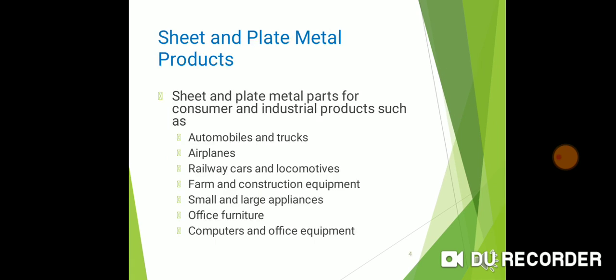Sheet metal products are parts of consumer and industrial products such as automobile bonnets, sheet metal plates, mud guards, airplane bonnets, seat covers, seat backs, railway cars, wagons and locomotive bodies, construction equipment, small and large appliances, office furniture, chairs, tables, decorative items, computers and official equipment are manufactured by sheet metal operation.